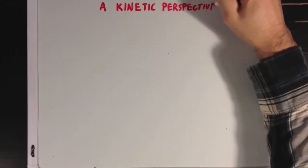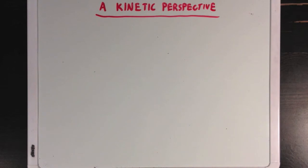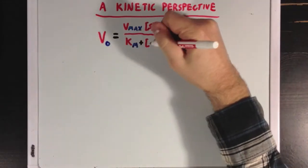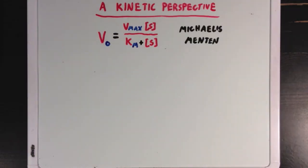Let's take a look at what we mean by increasing and decreasing enzymatic activity from a kinetic perspective. Remember the Michaelis-Menten equation, and if we're assuming substrate concentration to be constant, then there are two ways to influence enzymatic activity, or VO.